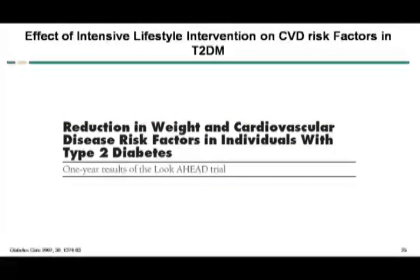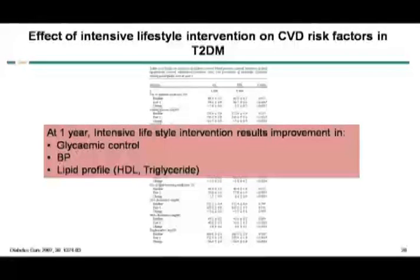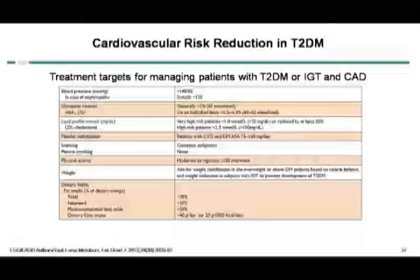Regarding reduction in weight and cardiovascular disease risk factors in individuals with type 2 diabetes — at one year, intensive lifestyle intervention results in improved glycemic control, blood pressure, as well as lipids. All three are targeted with lifestyle measures, including diet and weight management.